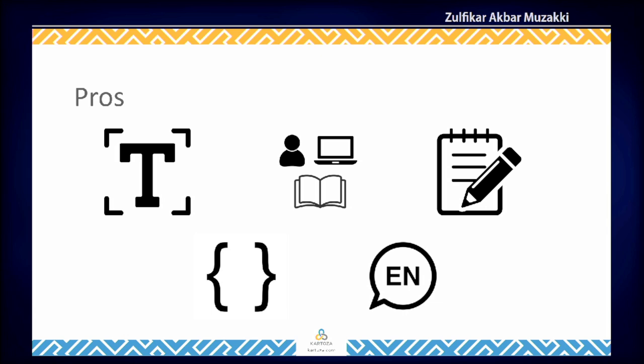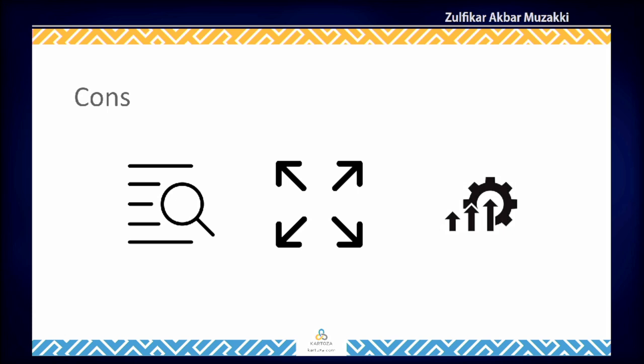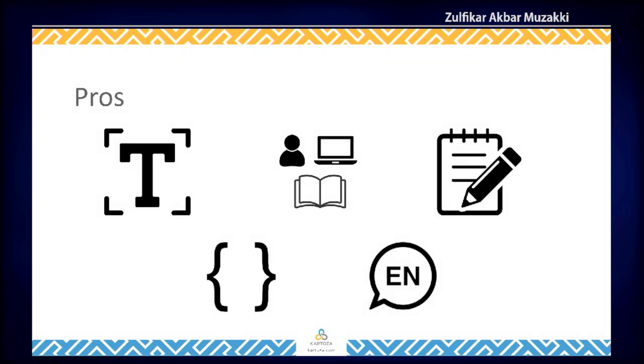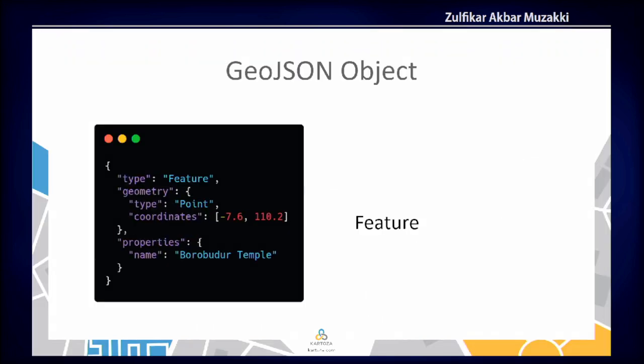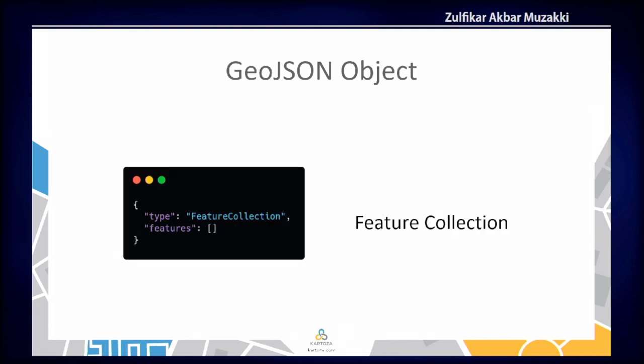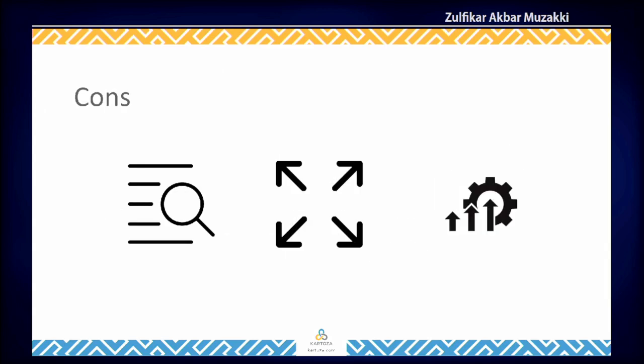GeoJSON is text-based, which means it is human and machine readable, and it is also editable in a text editor. It also uses simple data structures — key-value pairs — and common English words. However, it also has several cons: it does not have spatial indexing, and because of being text-based, it has a bigger size compared to binary-based formats. Also, because of the GeoJSON structure, each feature repeats type, geometry, and properties. If there are 100 features, those will be repeated 100 times, which makes GeoJSON size bloat quickly and scale poorly.